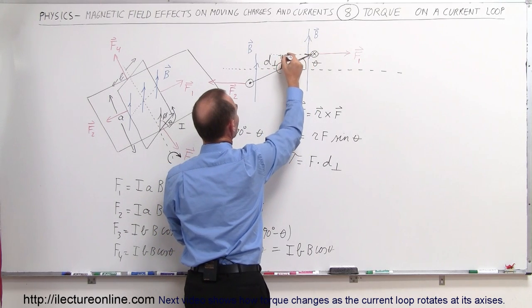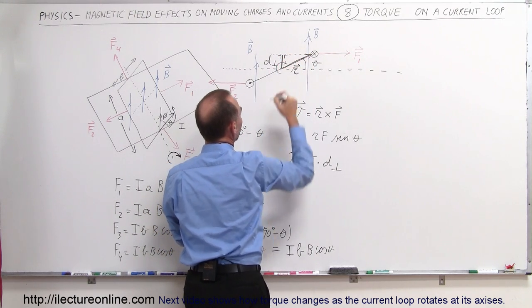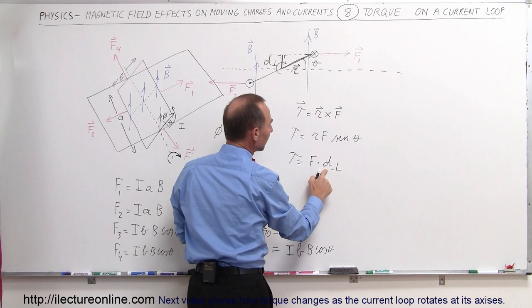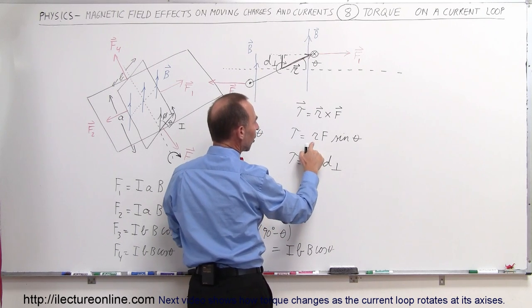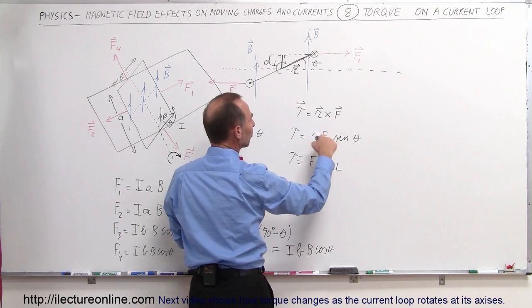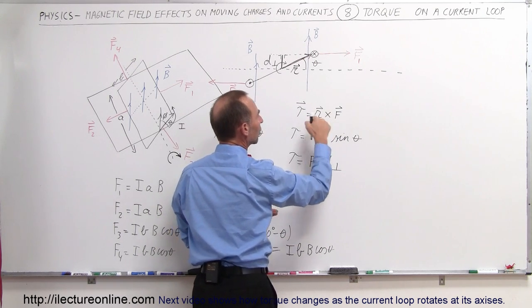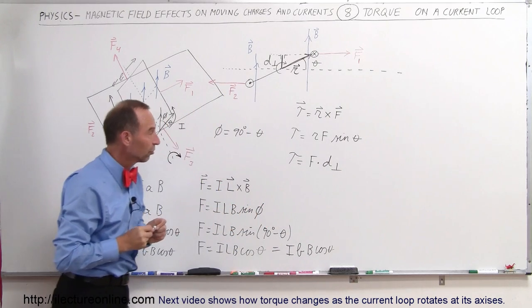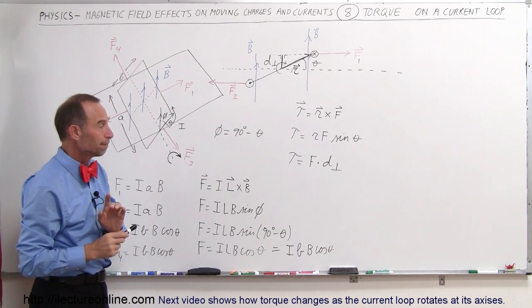You can see here that these are right angles, and D-perpendicular is the same as R times the sine of theta, which is the result of taking R cross the force — that would be the torque.